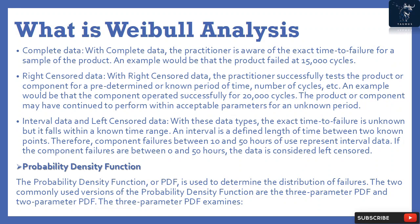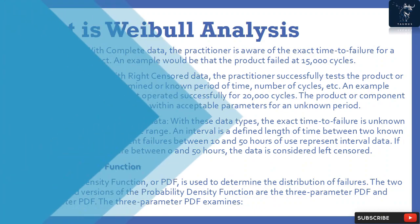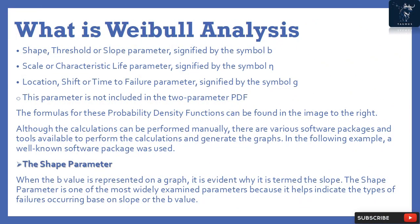Component failures between 10 and 50 hours of use represent interval data. If the component failures are between 0 and 50 hours, the data is considered left censored. The probability density function, or PDF, is used to determine the distribution of failures. The two commonly used versions are the three-parameter PDF and the two-parameter PDF. The three-parameter PDF examines: shape parameter (symbol B), scale or characteristic life parameter (symbol N), and location or time-to-failure parameter (symbol G).